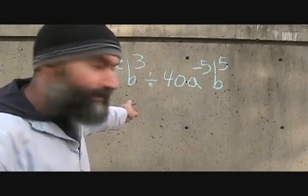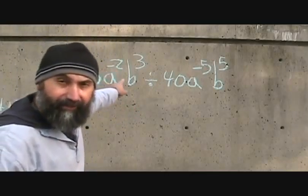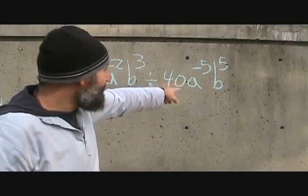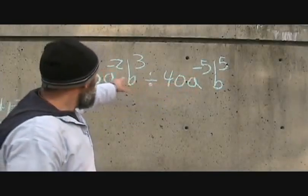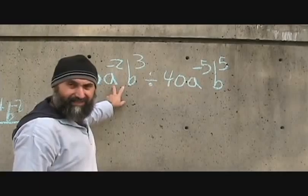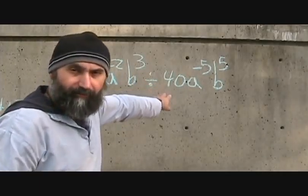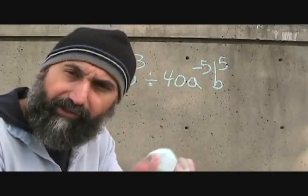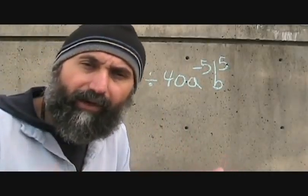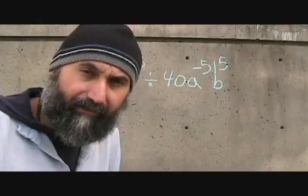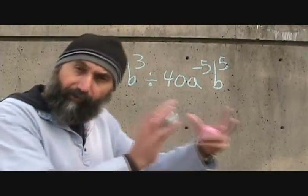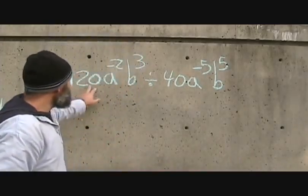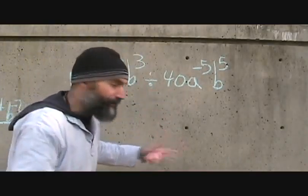We've got 120a to the negative 2, b cubed, divided by 40a to the negative 5, b to the 5. The numbers in front are just the coefficients. They deal with each other exactly the way they did in the real number set — so 120 divided by 40 is going to be 30.